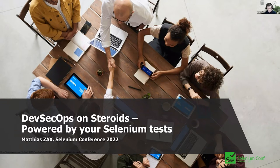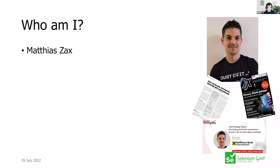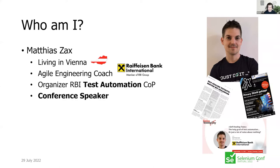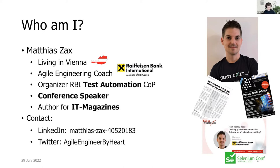Before I start, let me introduce myself. I'm Matthias Zacks, from Vienna, Austria in Europe. I work there for the company Raiffeisen Bank International as an Agile Engineering Coach. When people ask what I do, I help and coach teams and people to improve their maturity level in development, especially test automation. I also organize the community of practice for test automation and speak at conferences and contribute to IT magazines.